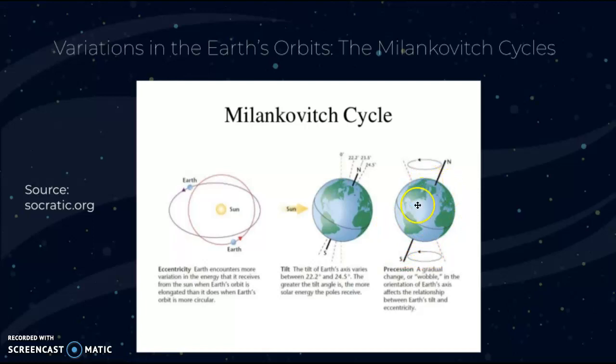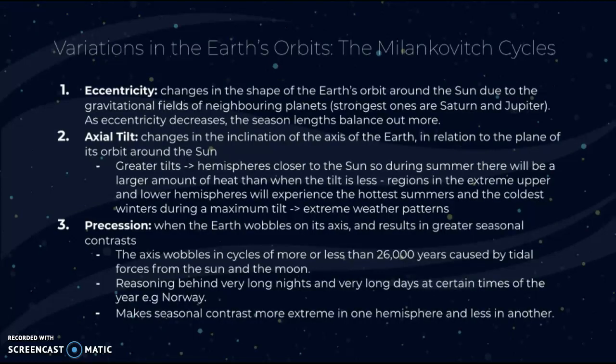Eccentricity refers to changes in the shape of the Earth's orbit around the sun due to gravitational fields of neighboring planets. The strongest gravitational impacts on the Earth come from Saturn and Jupiter. As eccentricity decreases, the season lengths tend to balance out more; if not, the season lengths become more extreme and uneven.